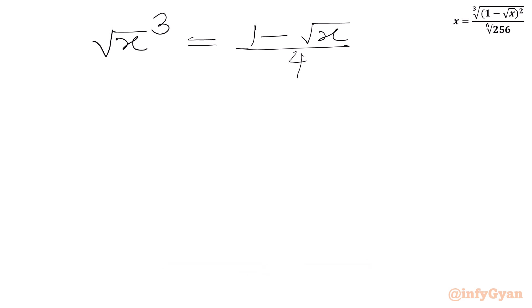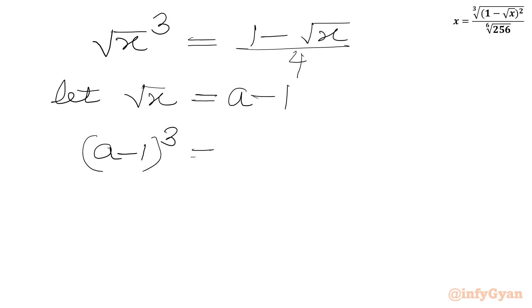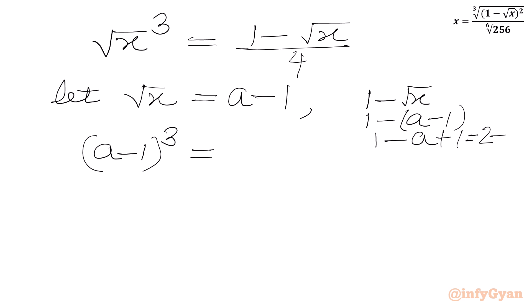Now we will use substitution. Let square root x equal to a minus 1. So the left-hand side becomes (a minus 1) cubed. On the right-hand side, 1 minus square root x equals 1 minus (a minus 1) equals 2 minus a. So the right-hand side becomes (2 minus a) over 4.